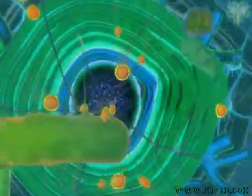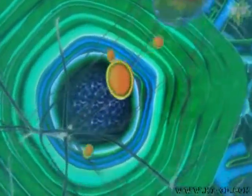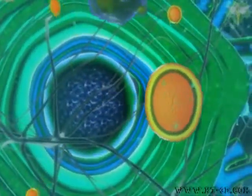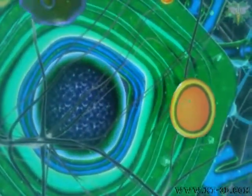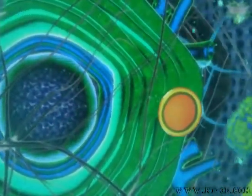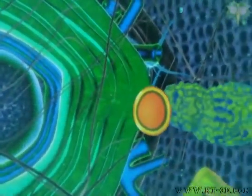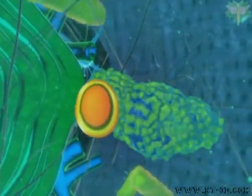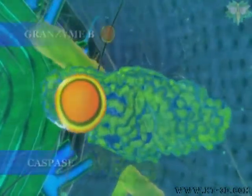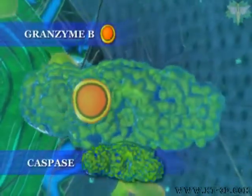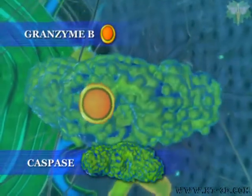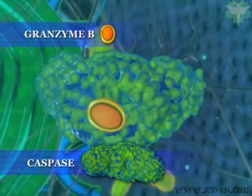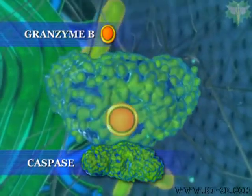The process of cancer cell death initiated by the granzymes uses part of the same basic machinery that gives rise to programmed cell death, or apoptosis.